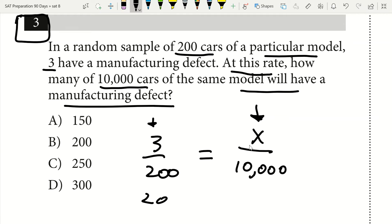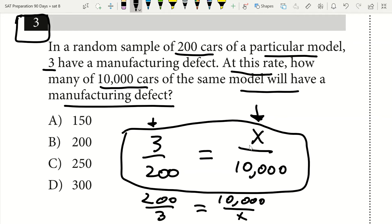I could have just as well done 200 over three equals 10,000 over x. So why did I choose to set it up like this, with three over 200 equals x over 10,000? Well, here's why: because it's going to save me steps and help me get to my correct answer faster.